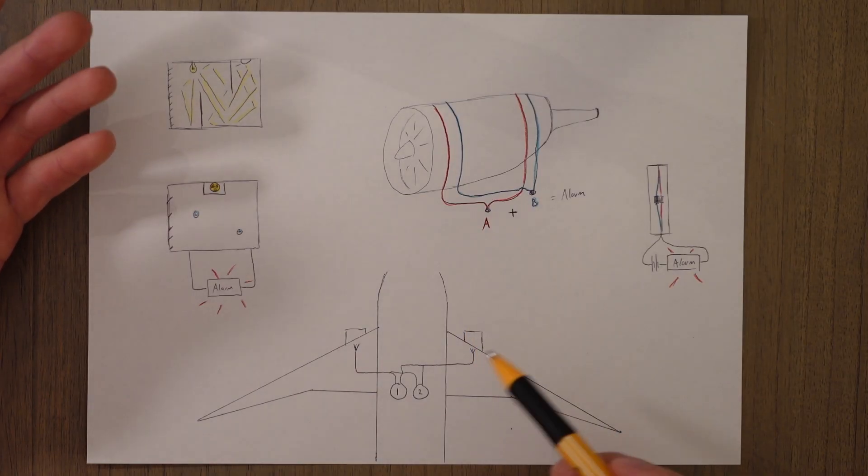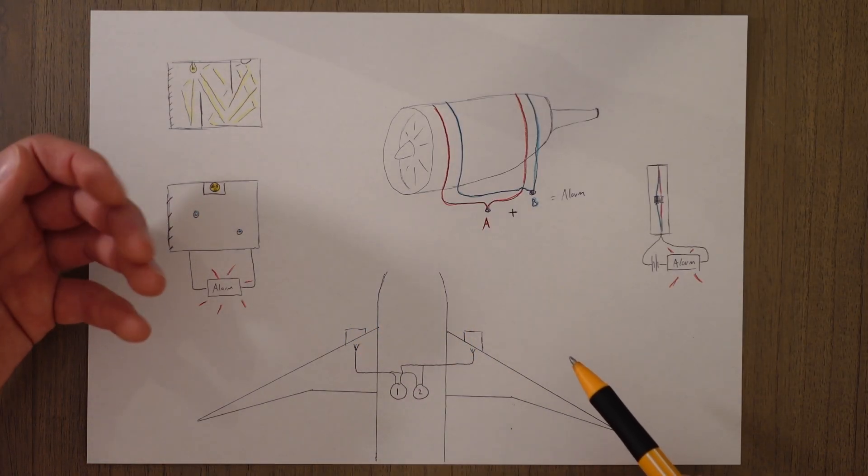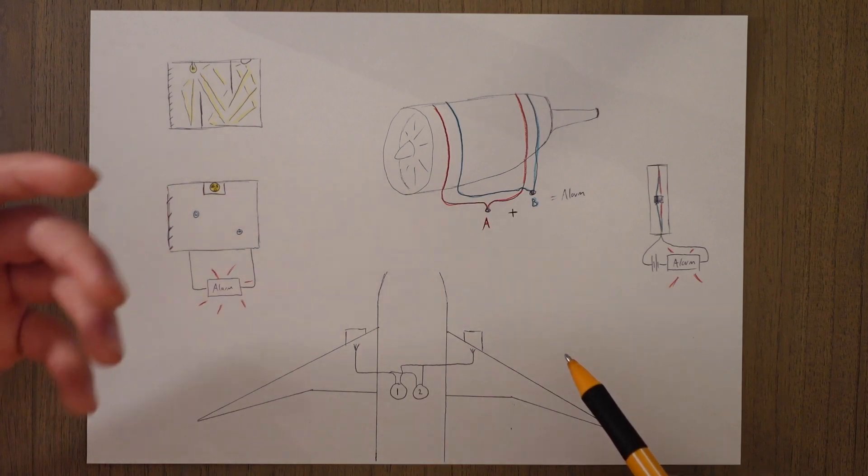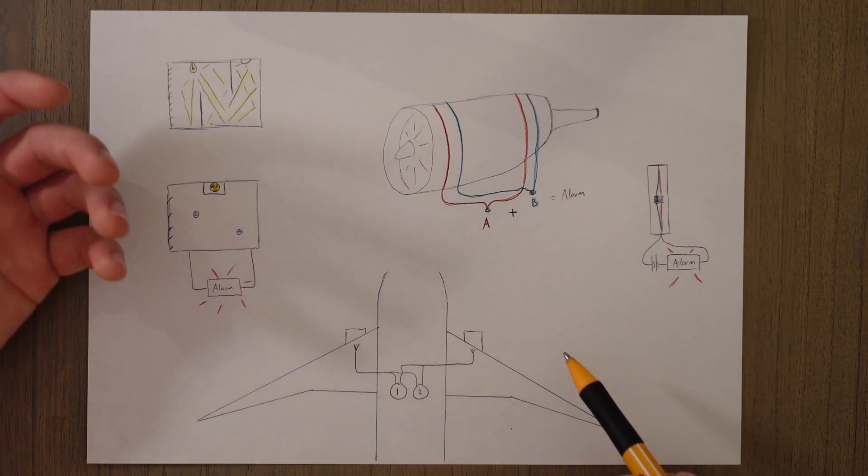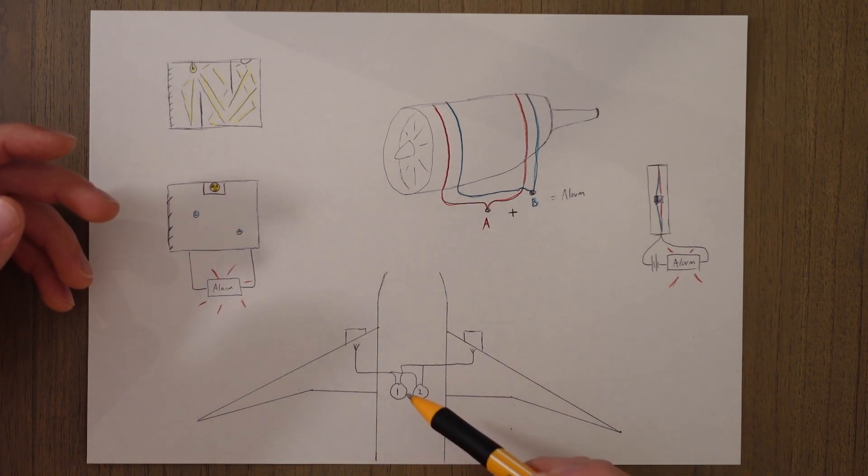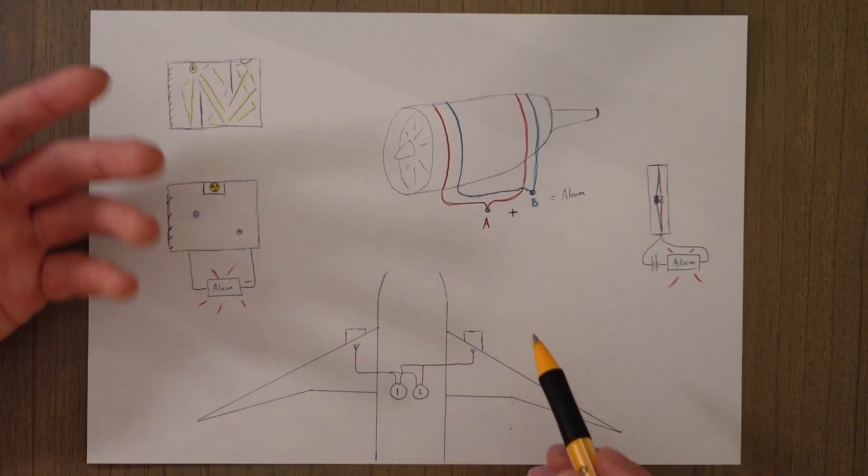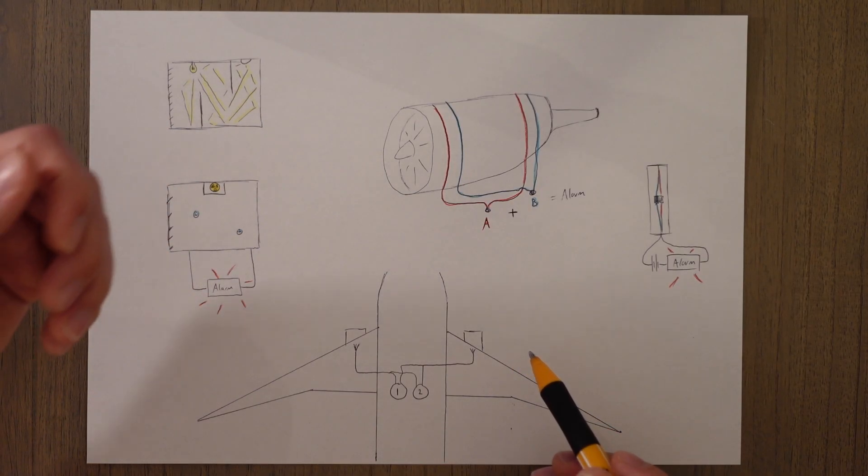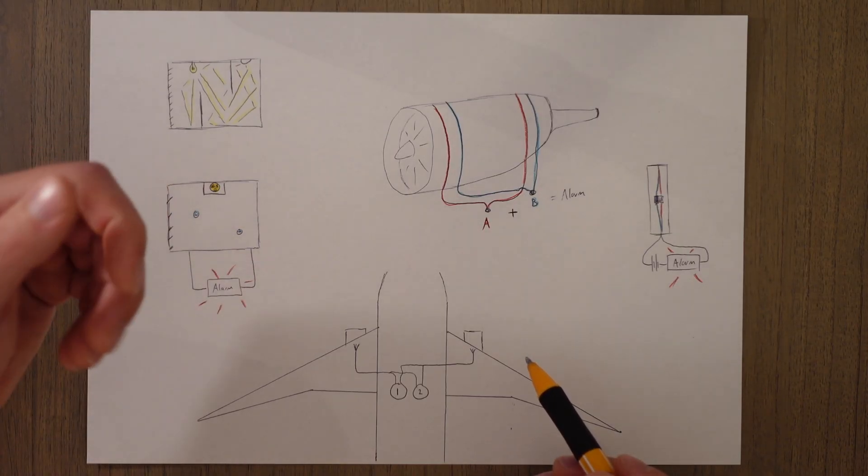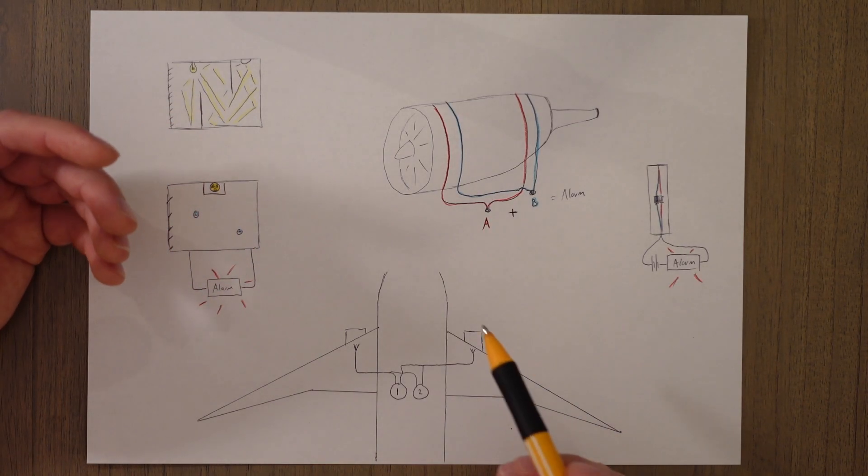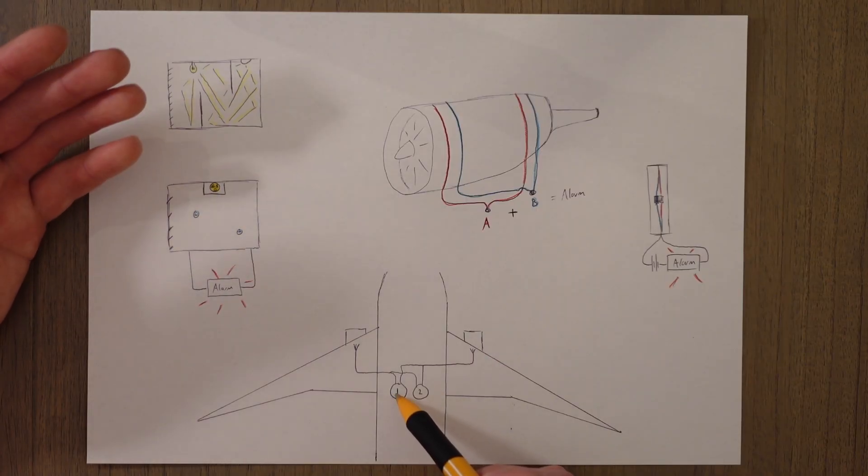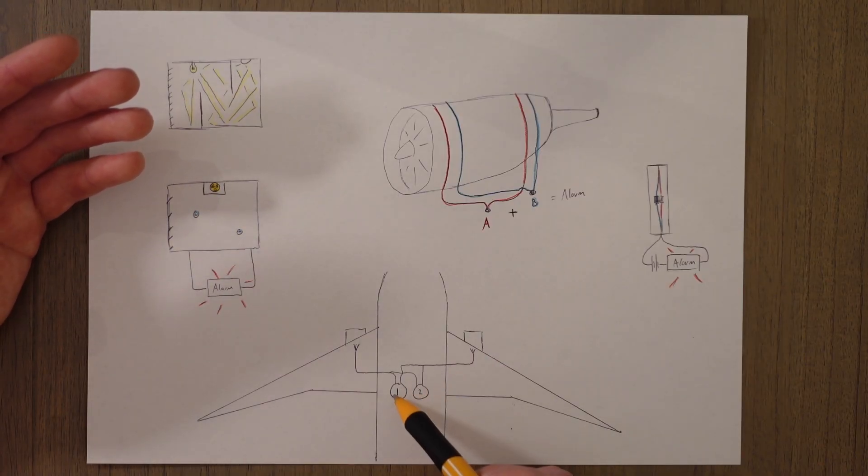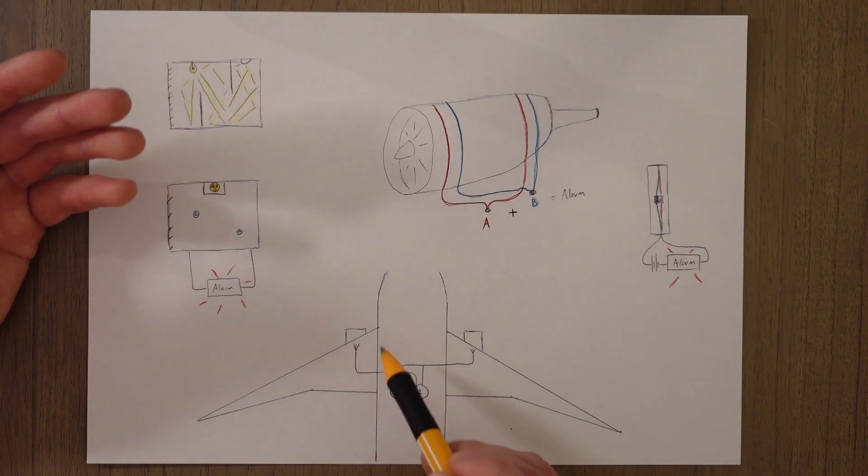If we have a fire in the engine we first isolate the engine by pulling the fire handle, then we select which squib we want to activate onto the fire. I can't say fire on fire that would be a bit confusing. So we select which squib we want to activate to suppress the fire. That will cause the fire suppressing fluid to be drawn from the bottle and sprayed over the engine.